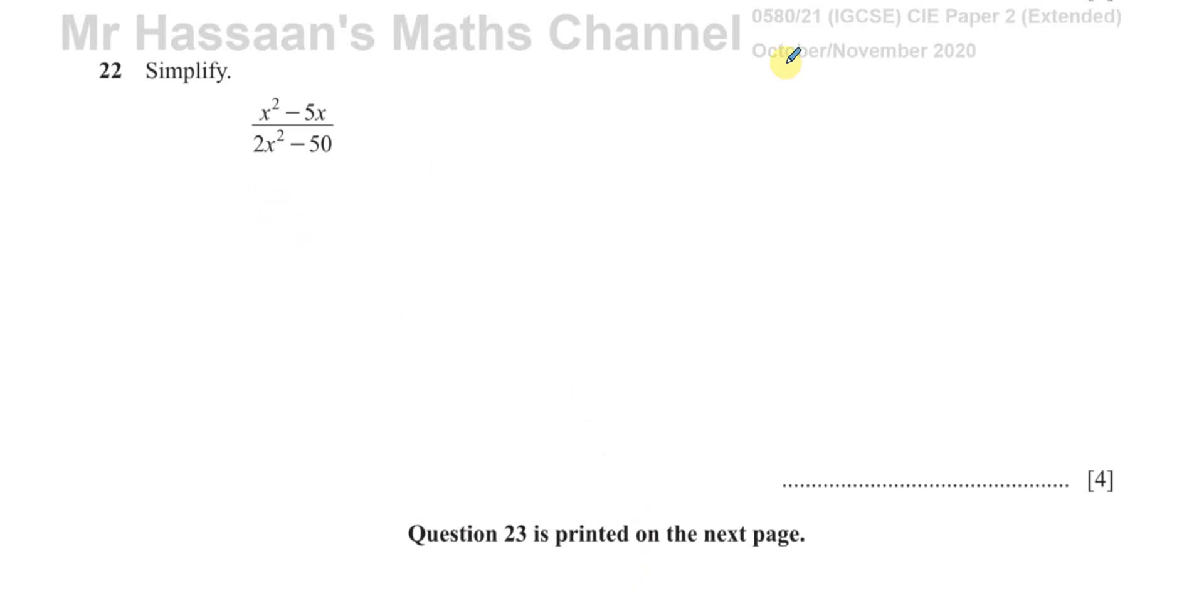For question number 22 from the October-November 2020 International GCSE Paper 2 Variant 1 from the Cambridge 0580 Extended Syllabus. This question is being requested by one of the students in the comments and is about algebraic fractions and simplifying algebraic fractions.